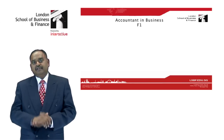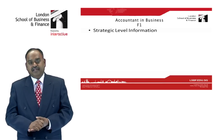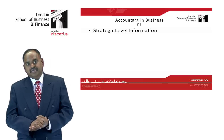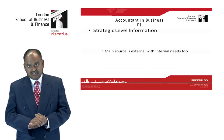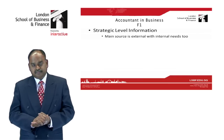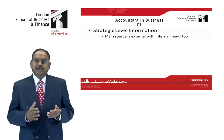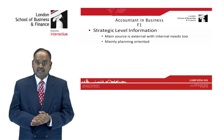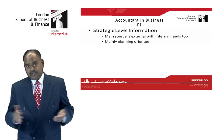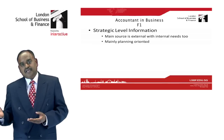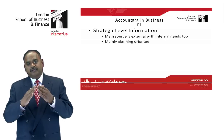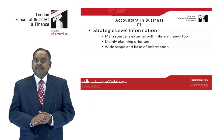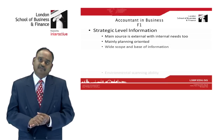For strategic level information, which is the highest level of the organization, the main source of the information comes from external sources. This information is mainly used for planning the future direction of the company. Since we are looking into the future, the scope of information will be very wide, and there is a lot of environmental scanning.